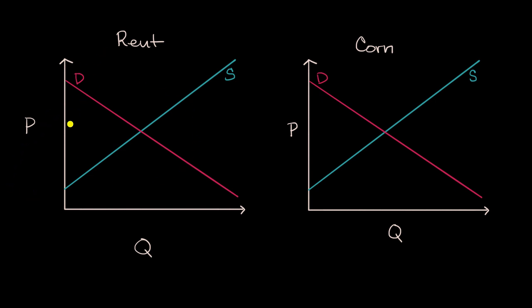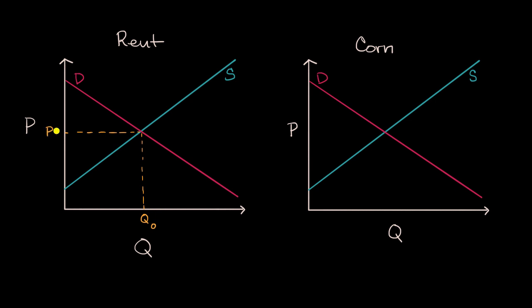Here I have my classic demand and supply curves for, say, the rental market. At a high price, the quantity demanded is low and the quantity that people would be willing to supply is quite high. And at a low price, the quantity that people would be willing to supply is low, while the quantity demanded would be quite high. We have our equilibrium price and our equilibrium quantity where these two curves intersect — I'll call this Q sub zero and P sub zero.